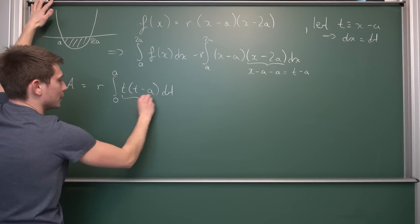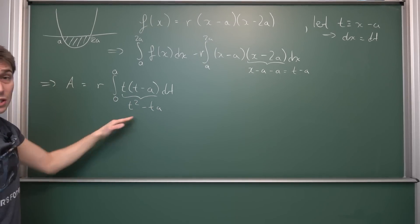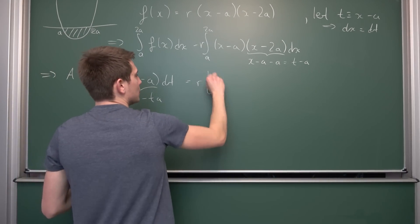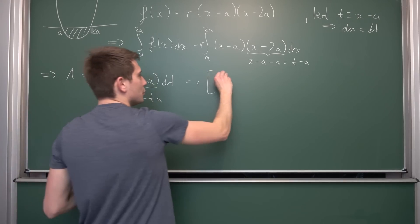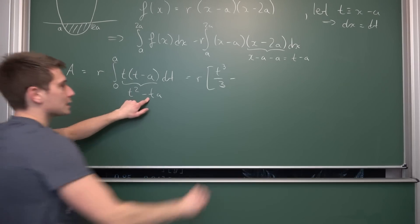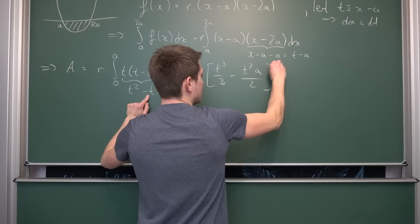Now we can start factoring everything out. This is going to turn into t squared minus t times a. Now this is just integrating a polynomial, which is extremely trivial. This is going to turn into r times t to the third power over 3 minus t squared times a divided by 2, and all of this from 0 to a.